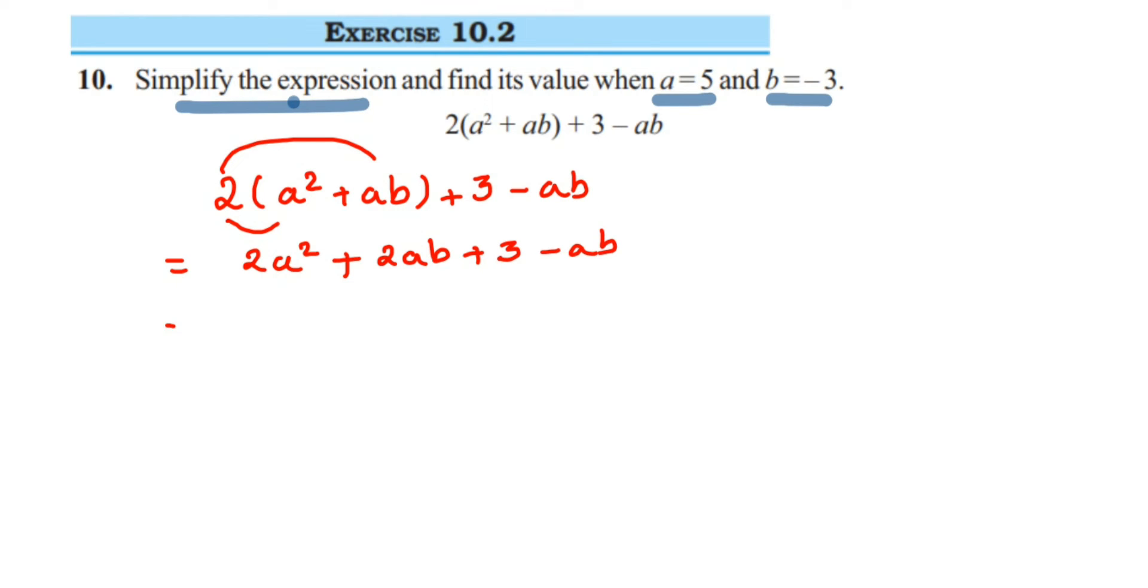Now, we have to add or subtract the like terms. 2a² we have. For 2a², we don't have a like term. We have 2ab and minus ab, they are like terms. We can solve it. 2ab minus ab will become ab. 2 minus 1 is 1, right? So, we will get ab plus 3. Now, from here, we cannot simplify further.